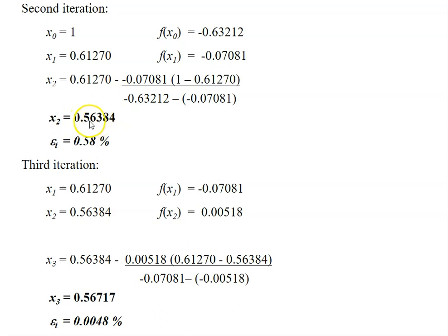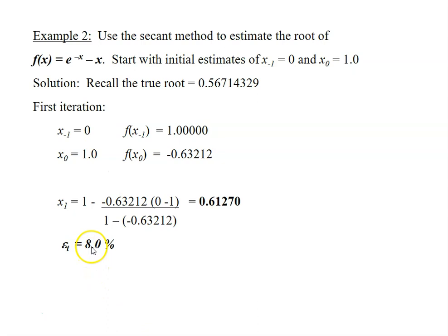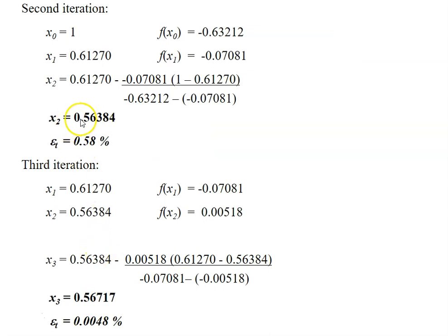Now, this 0.56384 has a true error of 0.58%. So if you notice that the true error has drastically reduced from 8% to 0.58%. This just to show you how fast the secant method converges to the true root.